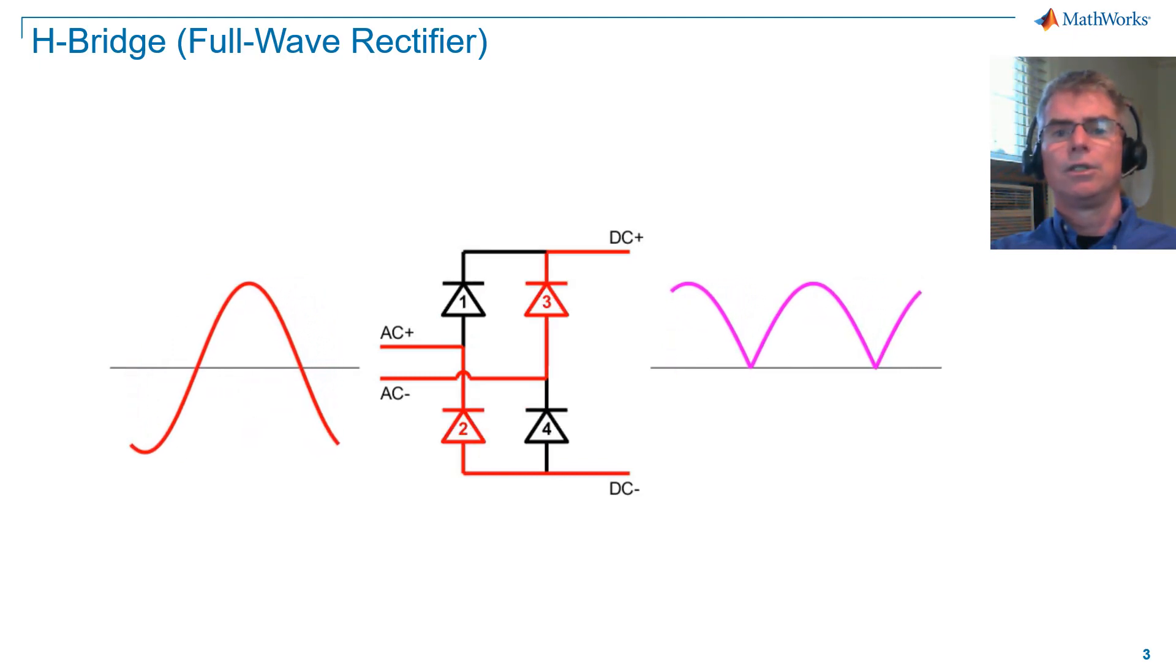In the animation, you can see that during positive conduction, diodes one and four conduct, and during the negative half cycle, diodes two and three conduct.